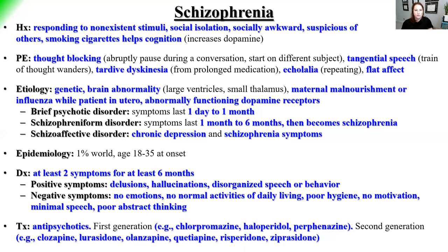Treatment for schizophrenia is antipsychotic medications — first generation and second generation. First-generation antipsychotics are well covered by insurance but have more side effects like tardive dyskinesia; haloperidol is an example. Second-generation antipsychotics are better tolerated with fewer side effects but are less covered by insurance; risperidone is an example.